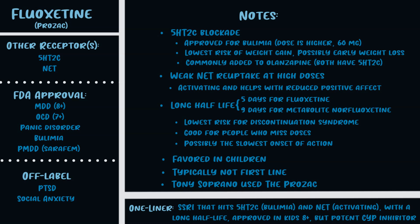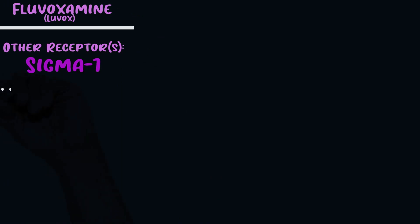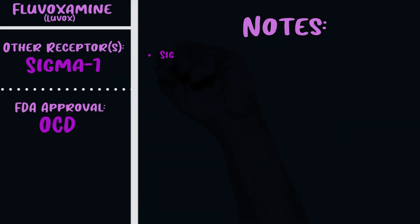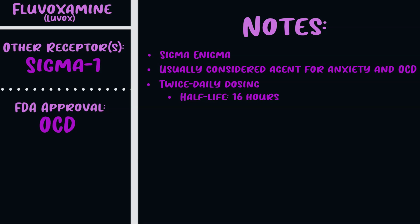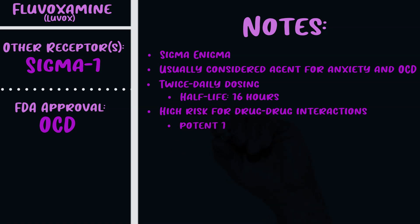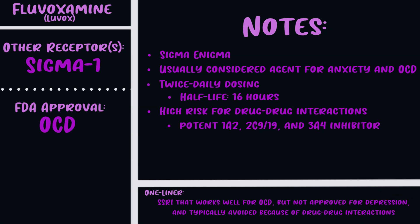The next SSRI is fluvoxamine, or Luvox. The other receptor it hits is sigma-1, and it's FDA approved for OCD. Again we have the sigma enigma, and all drugs with sigma-1 receptor activity are pretty good for OCD. Fluvoxamine is generally considered an agent for anxiety and OCD, and it's not approved for depression in the United States. It has twice-daily dosing because of a shorter half-life of 16 hours. The other major reason it's underused is its high risk for drug interactions, as it's a potent inhibitor at several CYP enzymes. In one line: it works well for OCD, isn't approved for depression, and is typically avoided due to drug interactions.